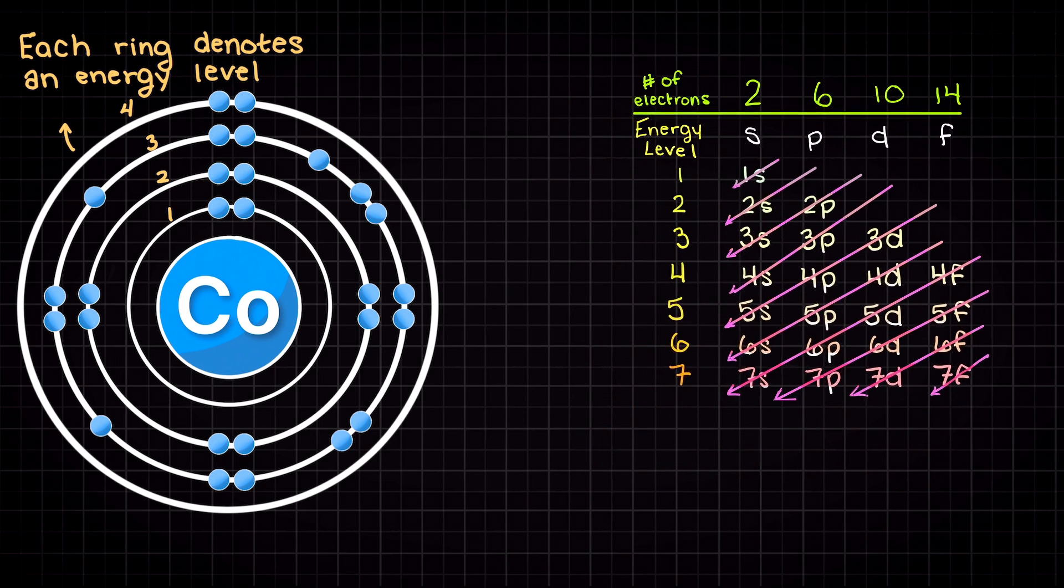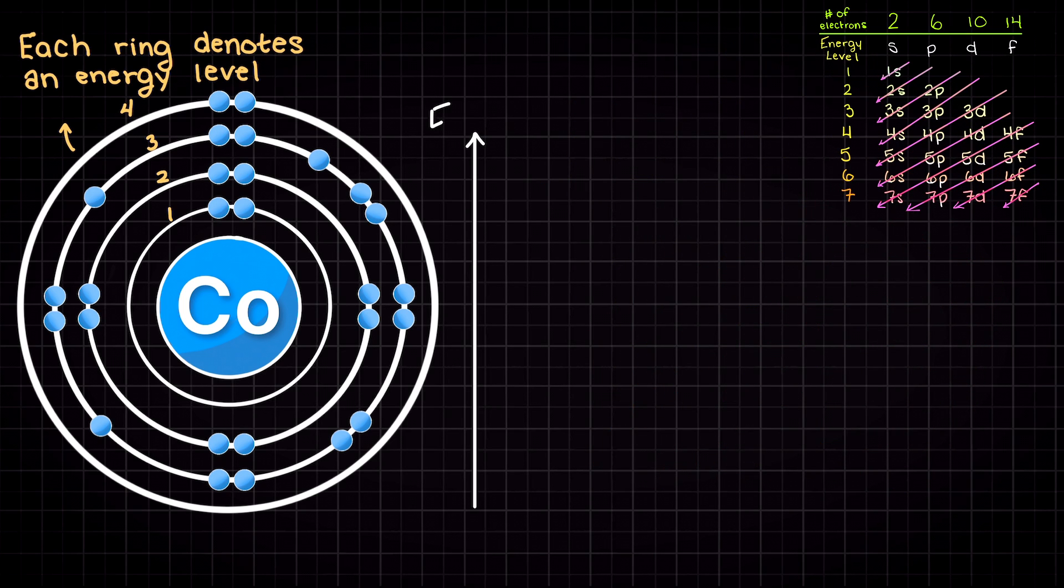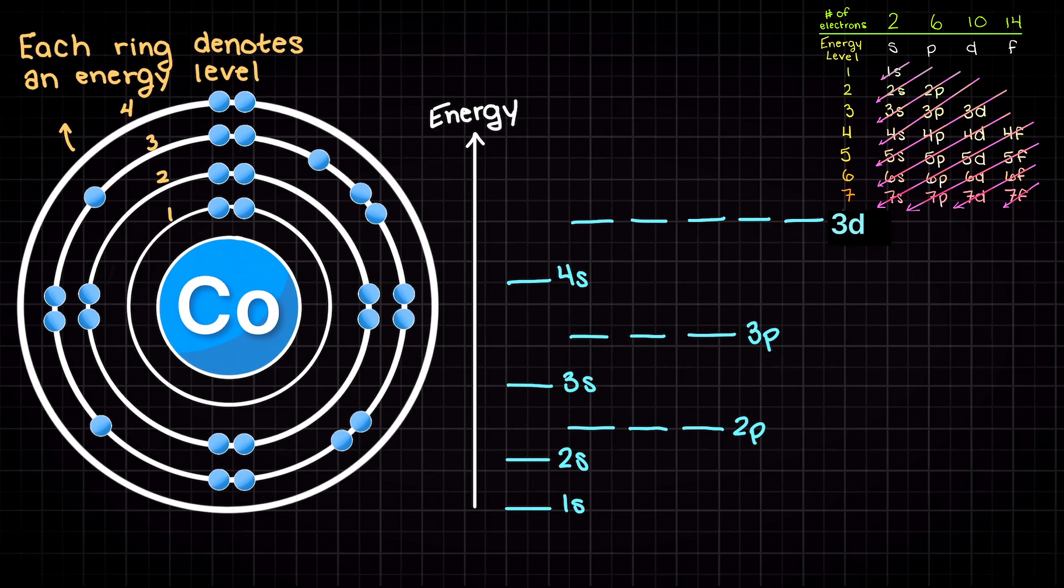Now, let's work out the electron configuration of cobalt. As always, we'll begin with the 1s subshell, and as we discussed before, the 1s subshell can hold 2 electrons. So that leaves us with 25 electrons left.